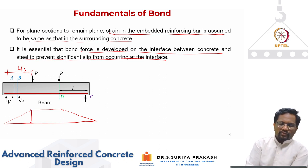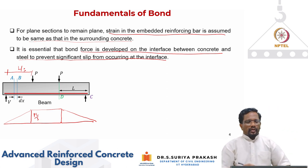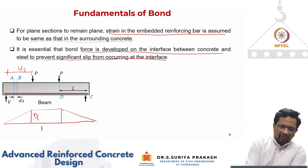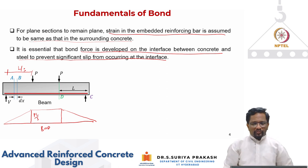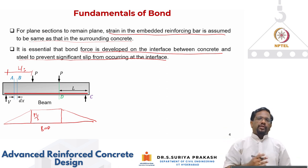The bending moment is going to be P into L by 3, so PL by 3. This is your bending moment diagram. Now let us look at how the bending moment is changing along the length of the beam.